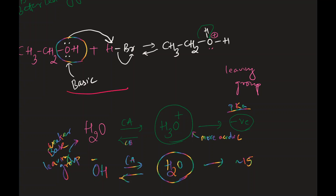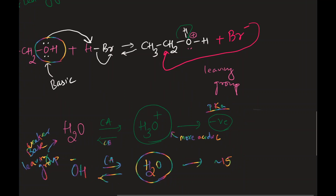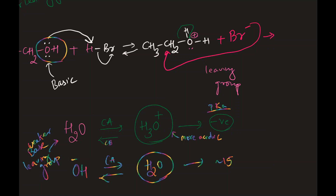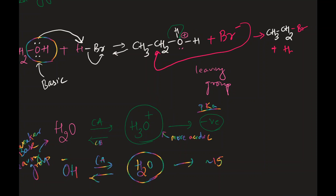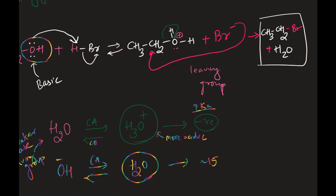Going back: oxygen attacks HBr, forming H2O⁺ on the carbon, and Br⁻ is released. Because this is a primary carbon atom, it goes through an SN2 reaction, where the attack and leaving happen simultaneously. The Br⁻ attacks from the back and water leaves at the same time. The product is CH3CH2Br plus water.